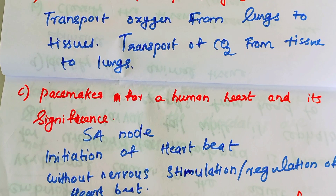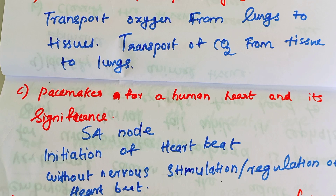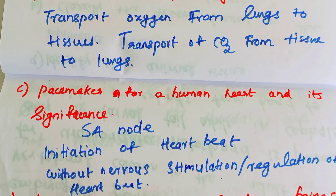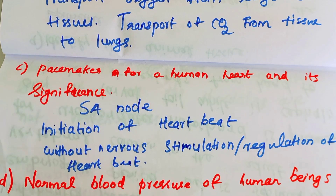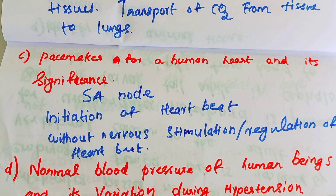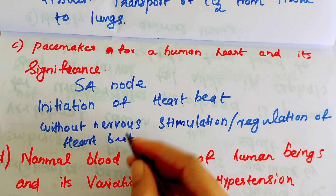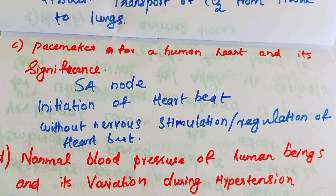The pacemaker of the human heart is the SA node — the Sinoatrial node. Its significance is that it initiates the heartbeat without nervous stimulation and helps regulate the heartbeat. The pacemaker is important for maintaining normal heart function.